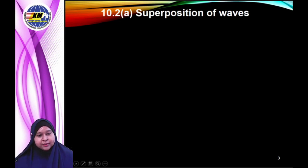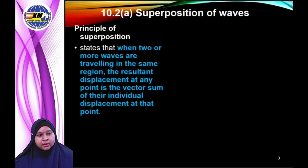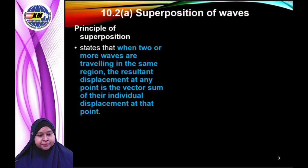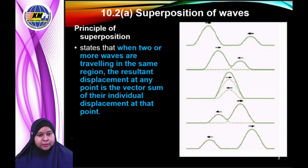Superposition of the wave. According to the principle of superposition, when two or more waves are traveling in the same region, the resultant displacement at any point is equal to the sum of their individual displacements at that point. This overlap can create a pattern of constructive interference or destructive interference.